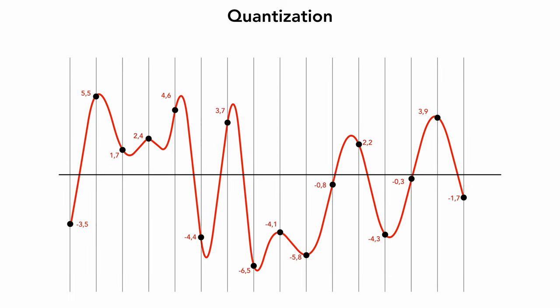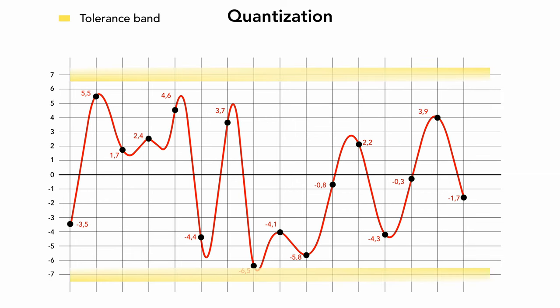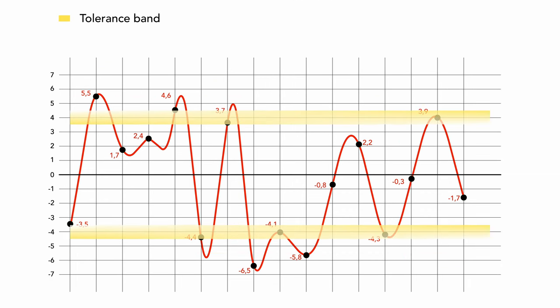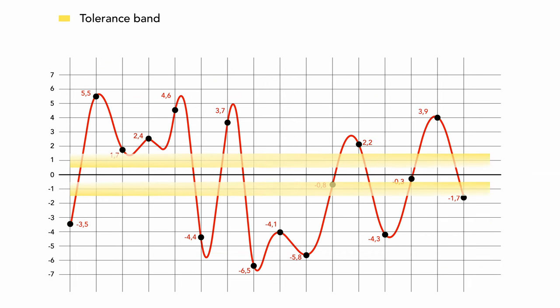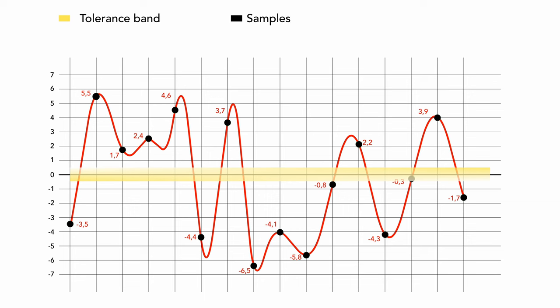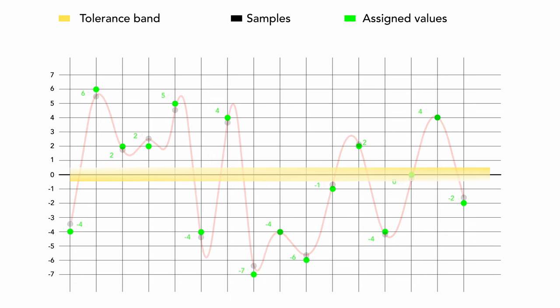Because computers and other devices that process digital signals can only express numbers with limited precision, the sampled values must be adjusted on the vertical axis. This is an example of integer quantization. The space around is divided into tolerance bands. Each sample, the black dots, that falls into the given tolerance band is assigned the given value, the green dots, during quantization.